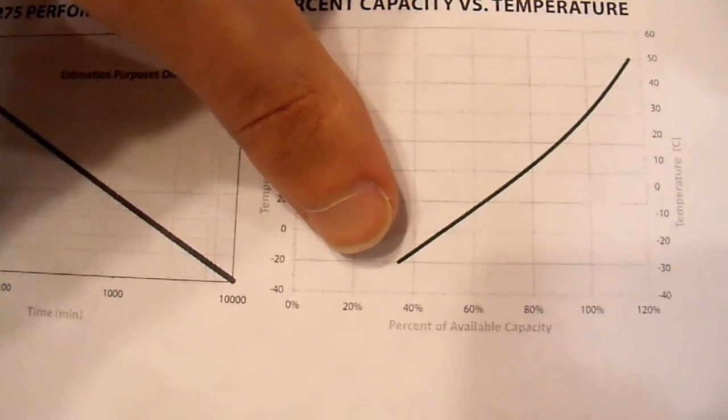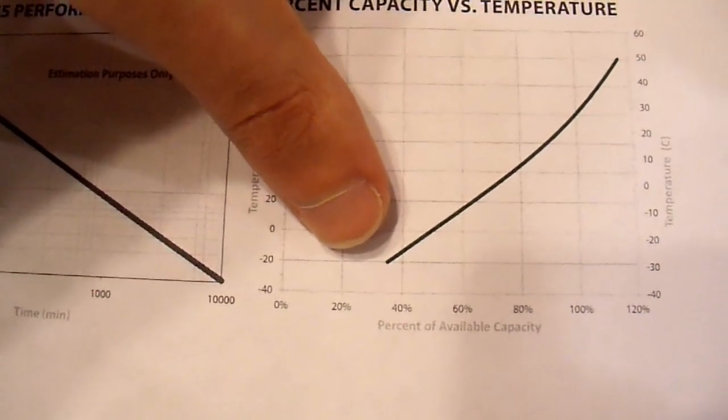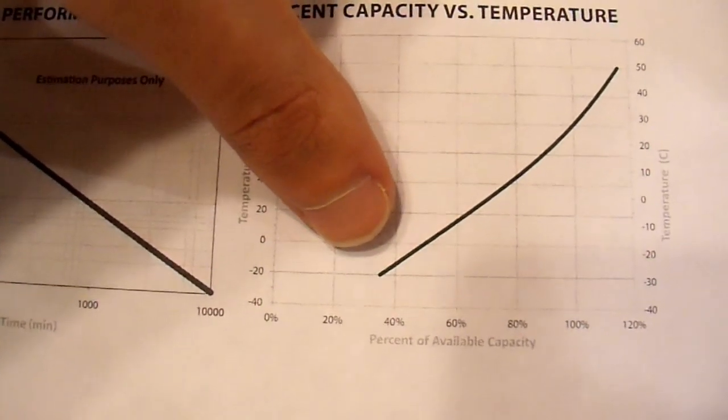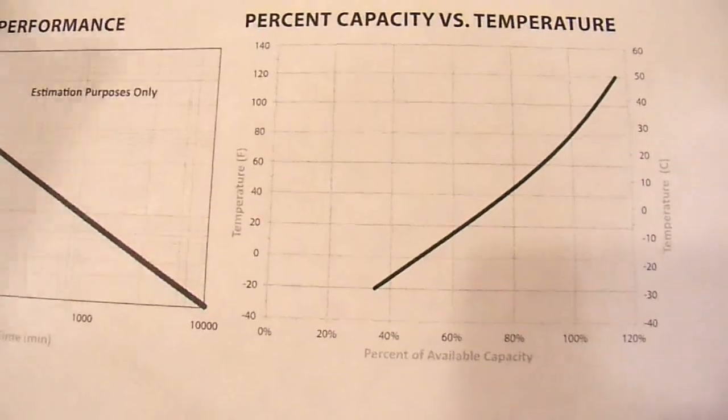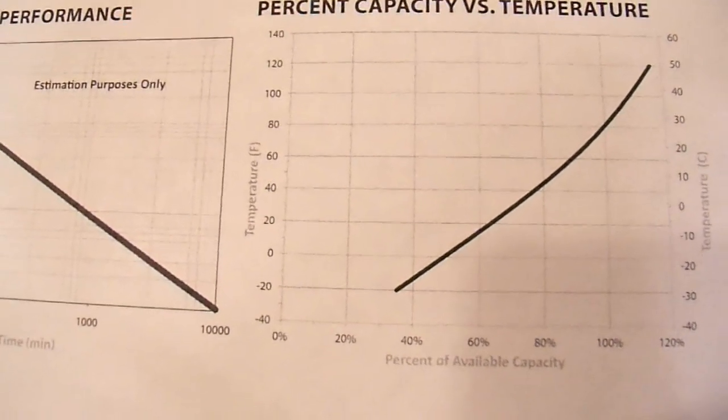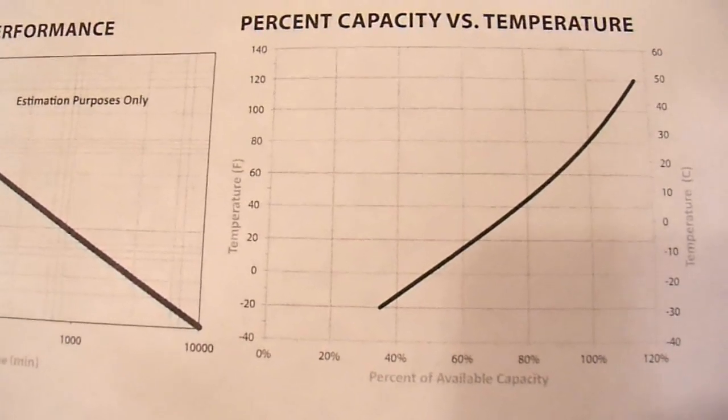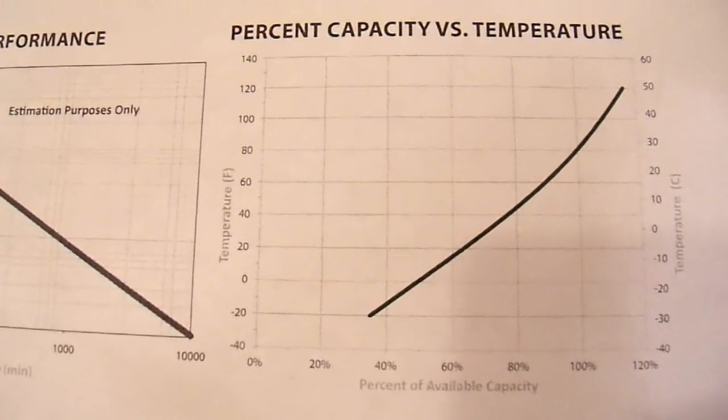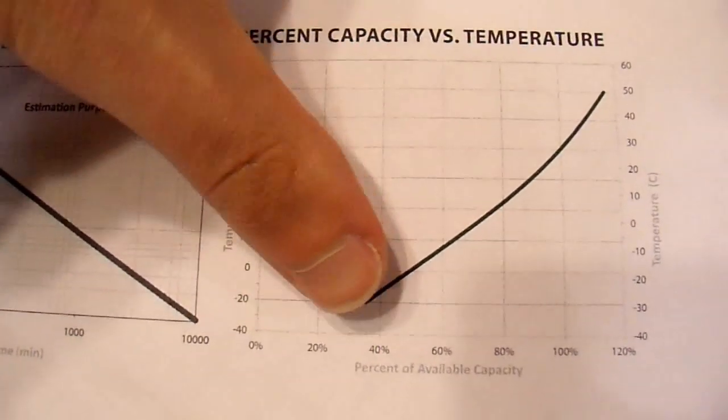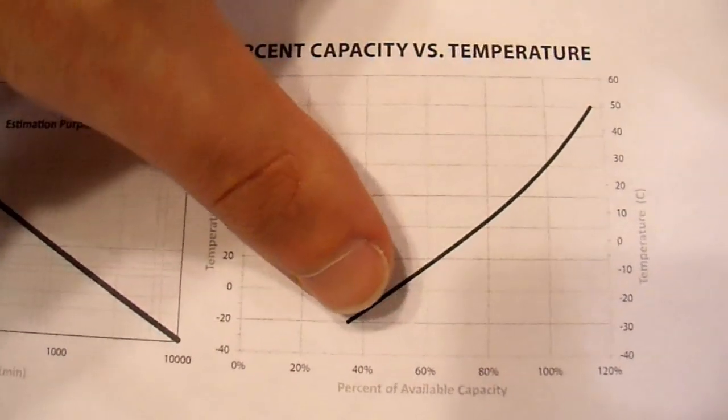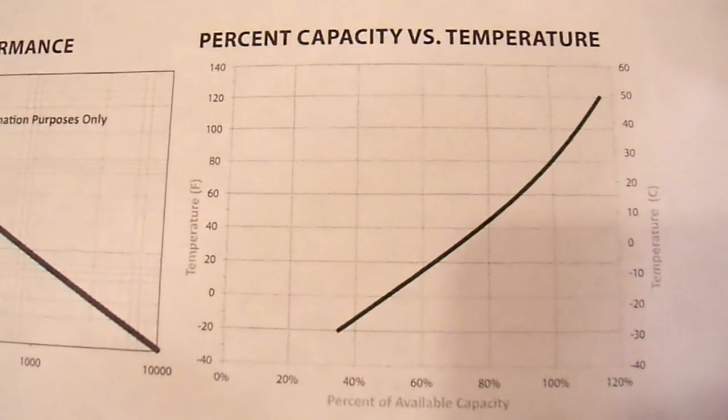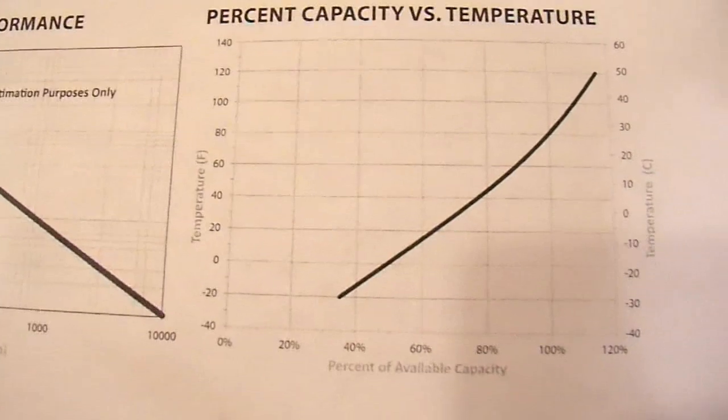But down here, when it's minus 20, your internal resistance of that battery, and chemical resistances, are very, very high. And you may only be able to discharge it down to, say, 70% state of charge. And after that, there's not enough ions left in that electrolyte solution, your resistance is too high, and you can no longer effectively use the rest. If you take this battery that is no longer useful at your current draw and bring it indoors, you can then continue to use the rest of it.